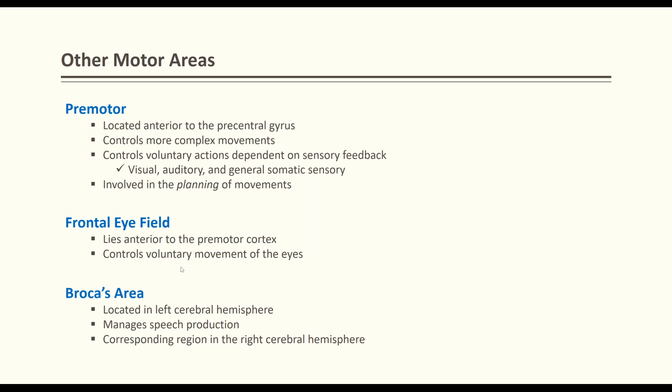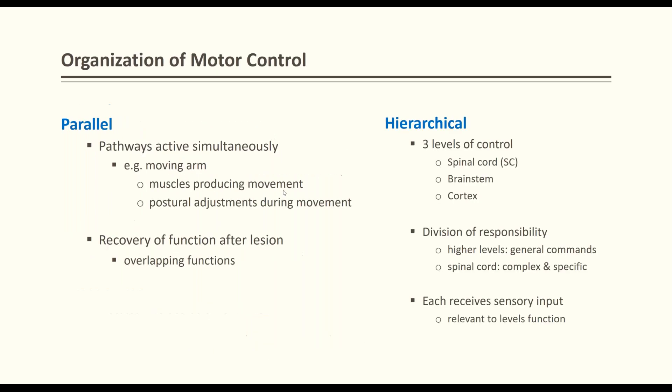If you're doing surgery on an aneurysm or brain tumor, these motor areas are very important: damage to the primary motor gyrus causes loss of gross motor movement; damage to the premotor gyrus causes lack of initiation or planning; and damage to the frontal eye field causes loss of eye movement. Broca's area is located in the left cerebral hemisphere, manages speech production, and corresponds to a region of the right hemisphere.